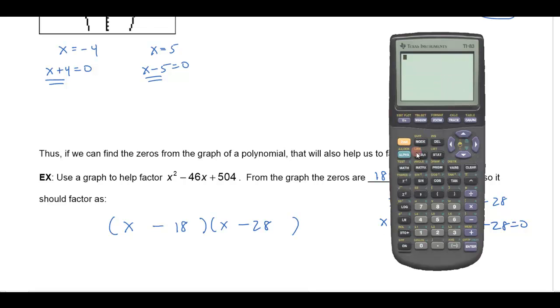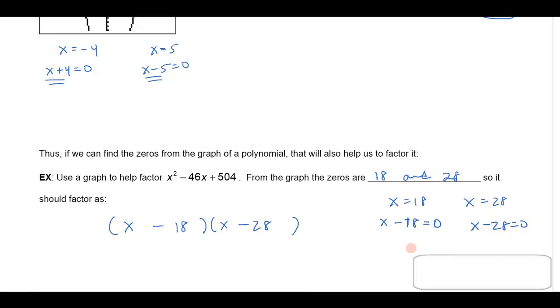Let's just double check that. If I take 18 times 28, yep, sure enough, it's equal to 504. So that's how we can use the graph of a polynomial to help me factor the polynomial.